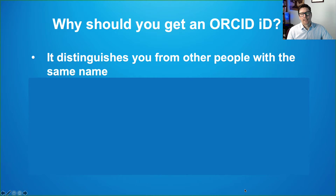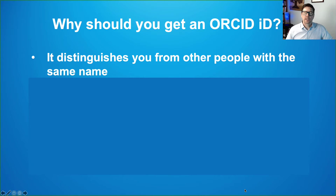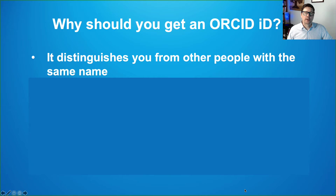Why should you get an ORCID ID? The main purpose is to distinguish you from other people who might have the same name. I know I'm not the only Brian Waters who publishes in the scientific literature. If you search my name on Google Scholar, Web of Science, or Scopus, you'll find other Brian Waters who have published papers that are not me. But if you search with my ORCID ID, you're only going to find my papers.